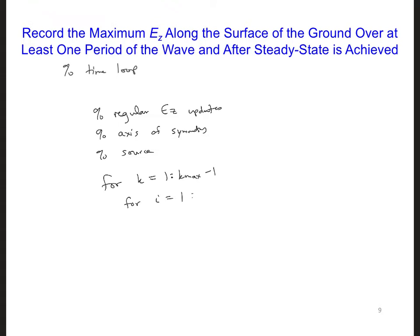Now for i, I'm going to start at 1, because for this we can include the axis of symmetry, because we're not updating, we're just assigning values, and we have EZ values at i equal 1. Now inside of here I'm going to have an if statement.